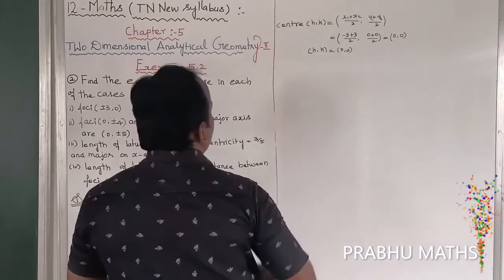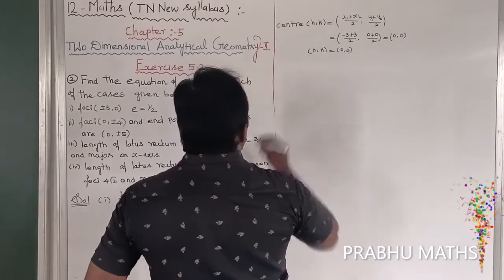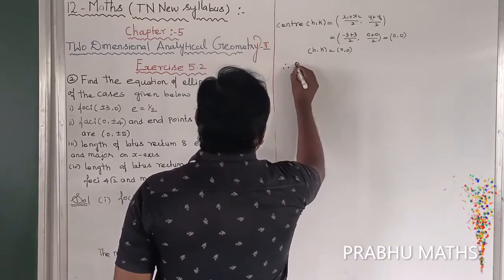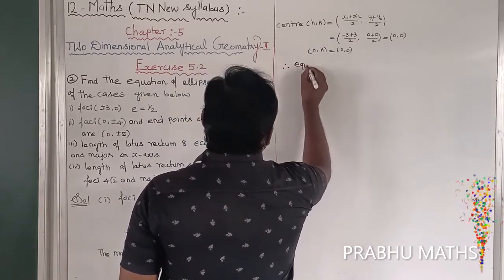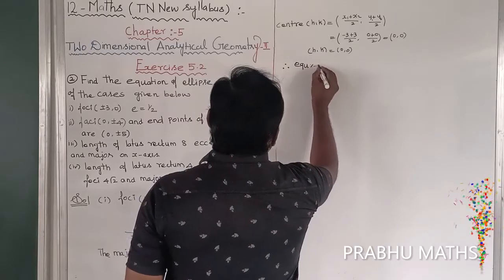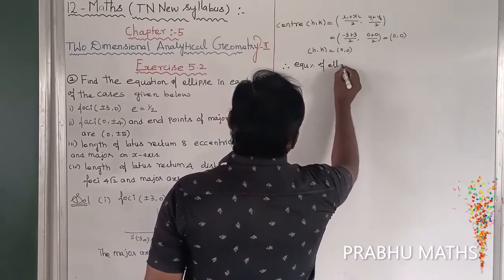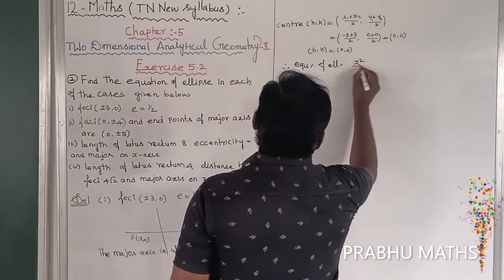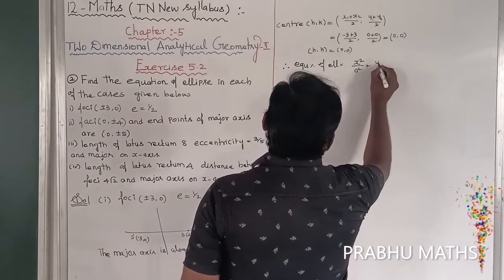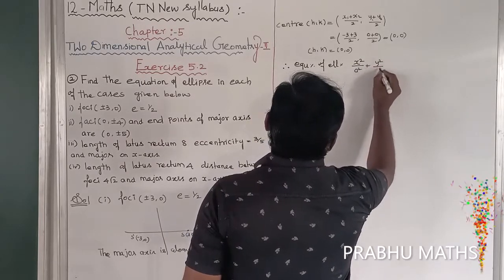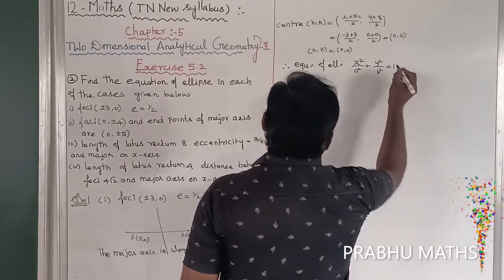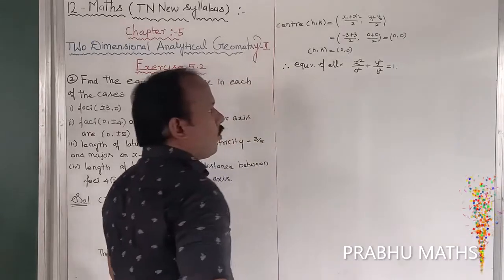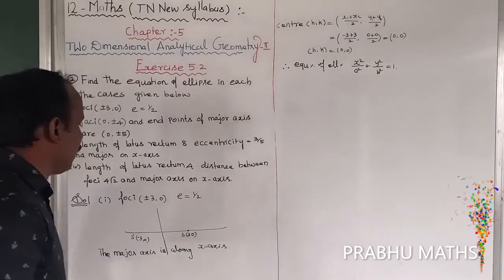Therefore, the ellipse equation is x squared divided by a squared plus y squared divided by b squared is equal to 1.